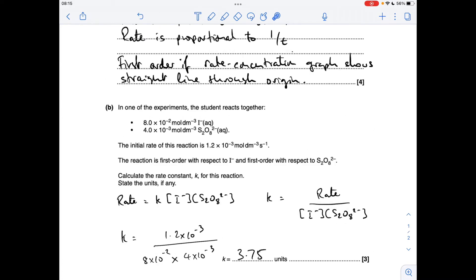And part B, we've got to work out the value for K and state the units, if there are any. So the rate equation looks like that, because it's first order with respect to the two reactants. Rearrange for K, we get this, and then just sub in the numbers that they've given you. So the numerical value of K comes out as 3.75.